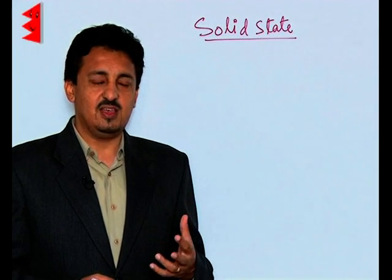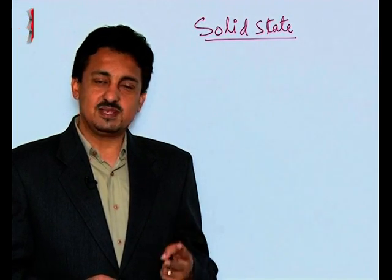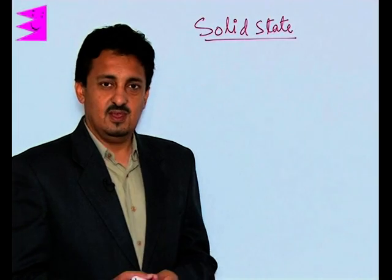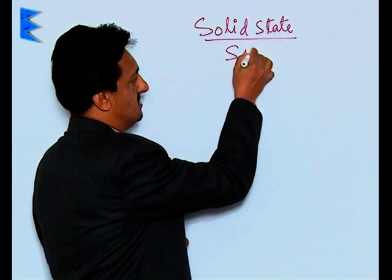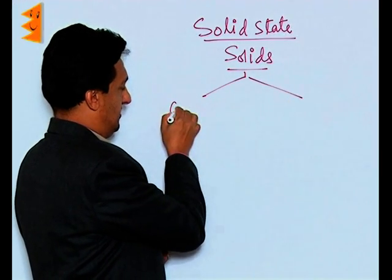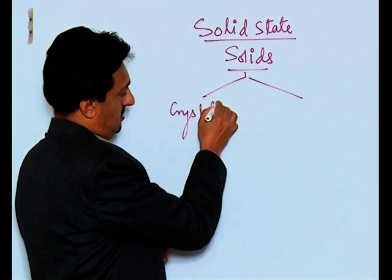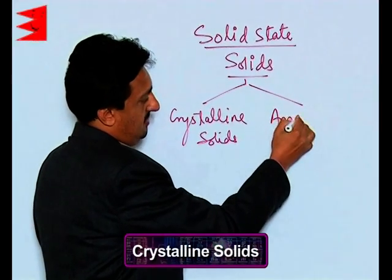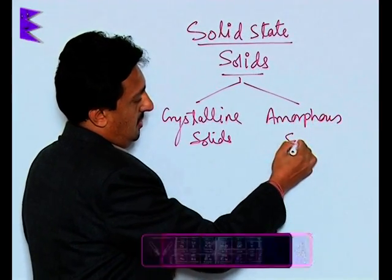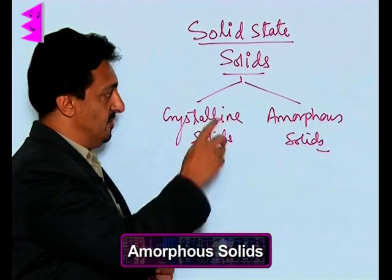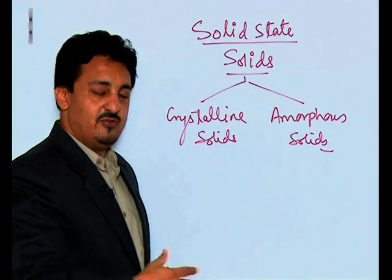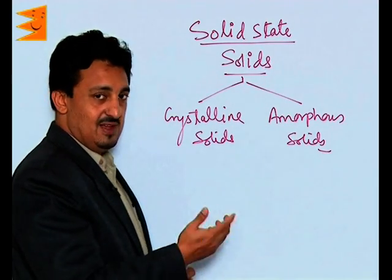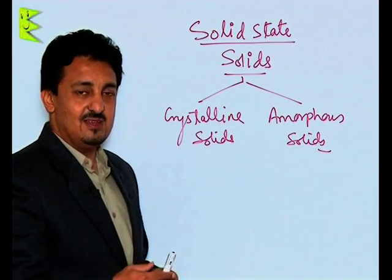Solids are classified into two major categories on the basis of the arrangement of the constituting particles they have. Therefore, the solids are of two types: crystalline solids and amorphous solids. This classification is on the basis of the arrangement of the constituting particles. Let us now study each of these types separately so that we can understand the major differences between the two.